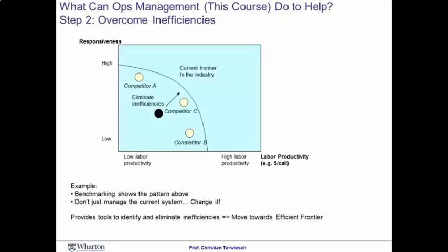Imagine you're working for this call center, performing at a certain level of responsiveness and productivity. You engage in benchmarking and look at other industry players. Company A is a lot more responsive — their customers wait less — but they are a lot less efficient. Company B has much better productivity, but at the cost of responsiveness: they are cheaper but a lot slower. Both of these make good sense, because they reflect the trade-off we just discussed.